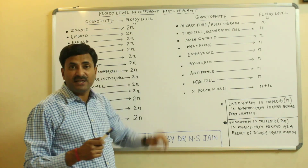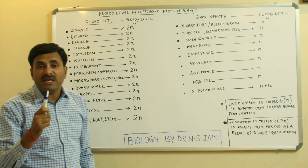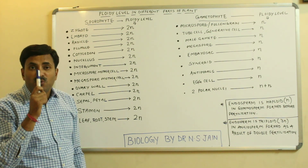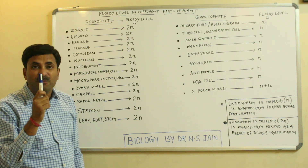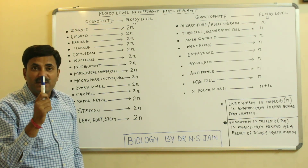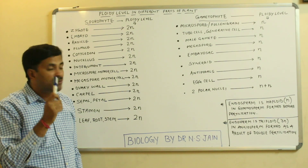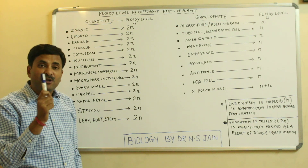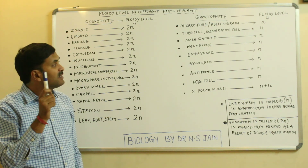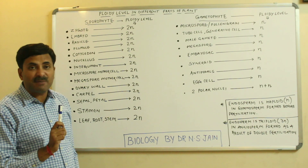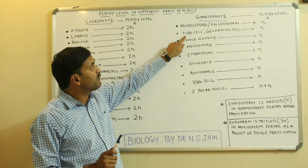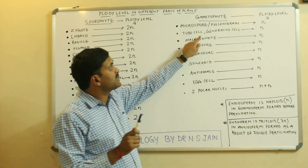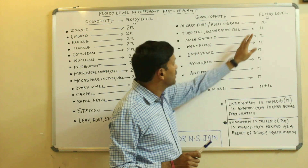Now, tube cell and generative cell. These are formed inside the nucleus of the pollen grain. When the nucleus of the pollen grain divides, two nuclei are formed — the tube nucleus and the vegetative nucleus — and later by cytoplasmic division, the tube cell and generative cell are produced. Because they are formed inside the pollen grain, which is haploid, the tube cell and generative cell are also haploid.